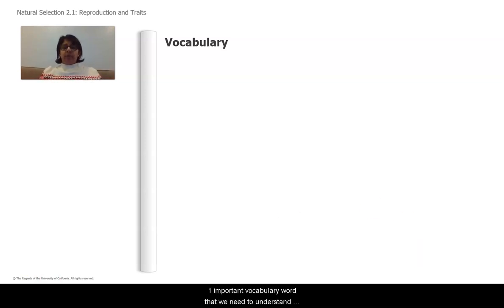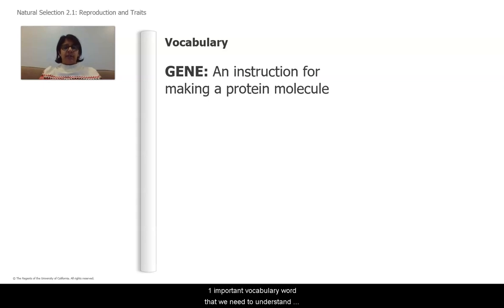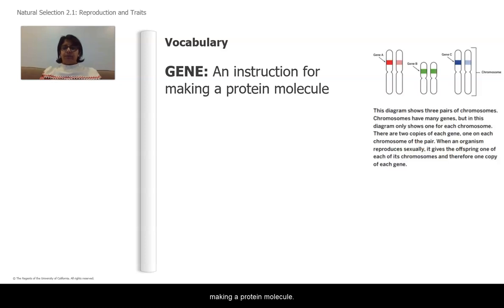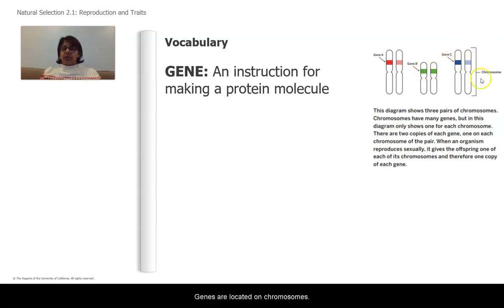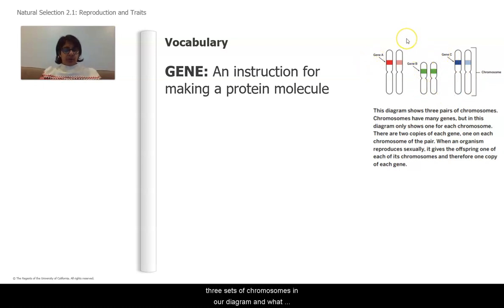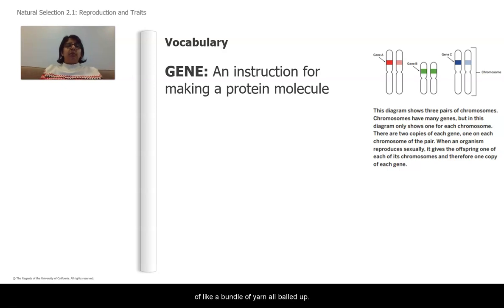One important vocabulary word we need to understand is gene. Genes are instructions for making a protein molecule. Here's a diagram that shows genes. Genes are located on chromosomes — there are three sets of chromosomes in our diagram. Chromosomes are tightly wound bundles of DNA, kind of like a bundle of yarn all balled up.